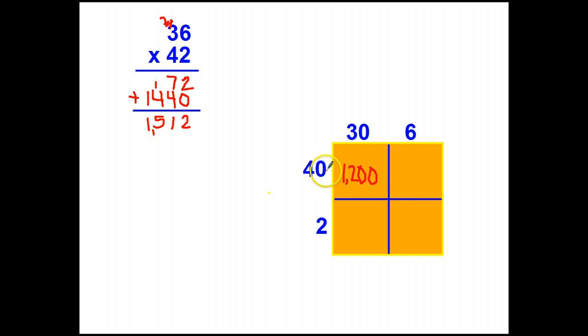Next these two cross, so 40 times six, six times four is 24, we're multiplying one zero. 30 times two, three times two is six, we're multiplying tens, and then two times six is twelve.